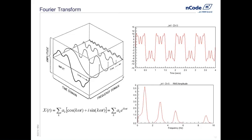The frequency domain can be plotted in the form of a PSD, or in this case an amplitude spectrum density, where we see peaks representing those four simple sine waves. The PSDs we're going to be using in everyday life are going to be a bit more broadband than what we see here, with quite a bit more frequency content. But this is essentially the way in which we're going to decompose our time history.